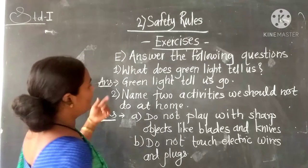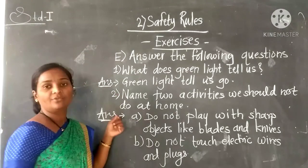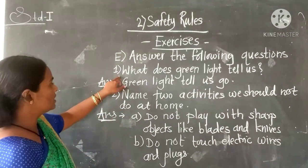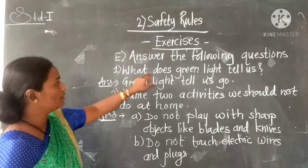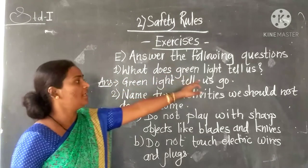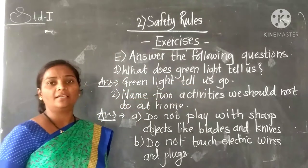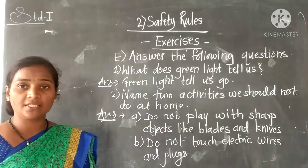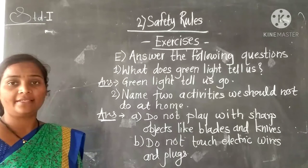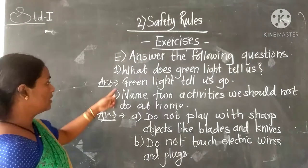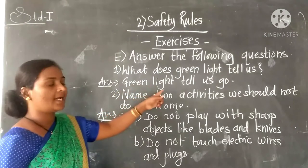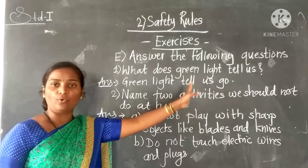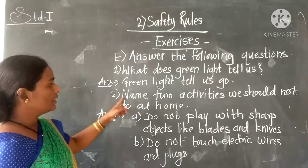Next is Section E: answer the following questions. Question one: what does the green light tell us? Green light tells us to go.